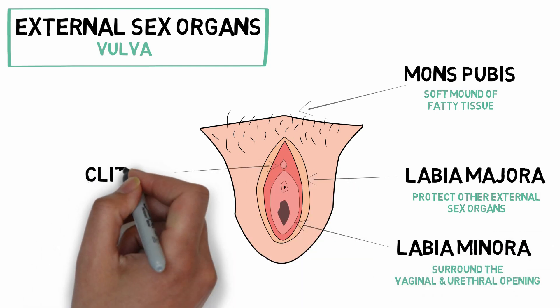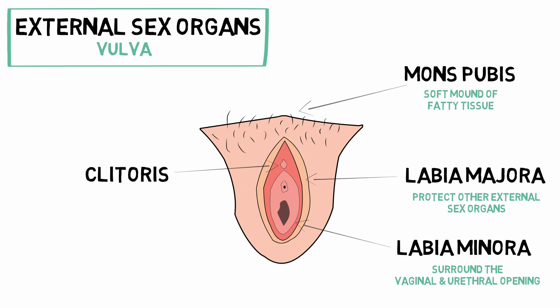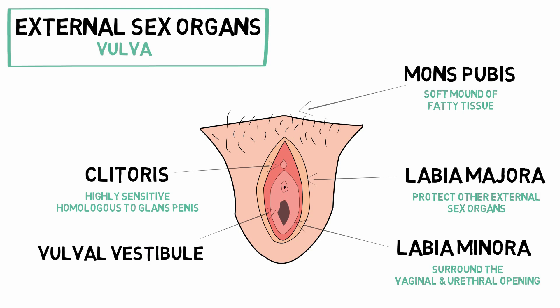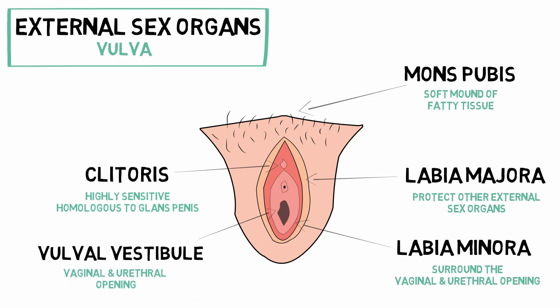The labia minora lie inside the labia majora and surround the vaginal as well as the urethral openings. The two labia minora meet at the front and form the clitoris, which is highly sensitive as it contains many nerve endings. The clitoris is homologous to the glans penis in males. The central part is the vulval vestibule, which contains the vaginal and urethral openings.